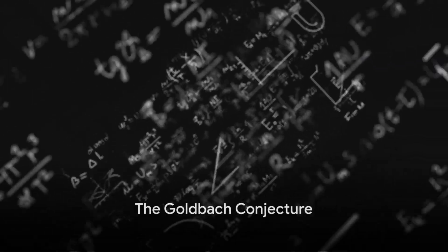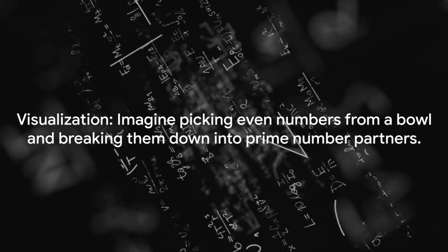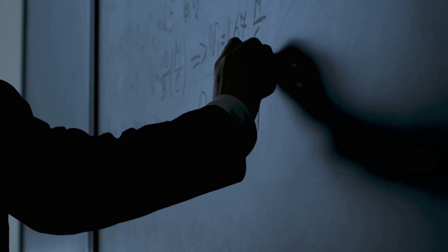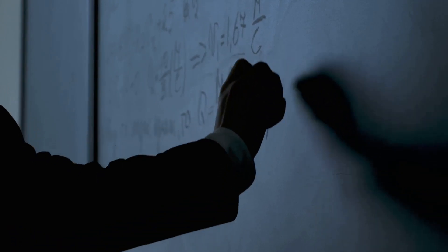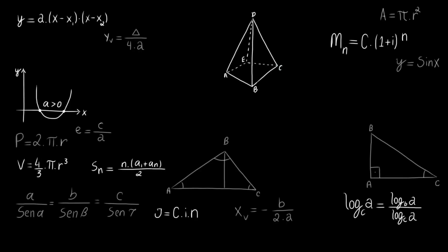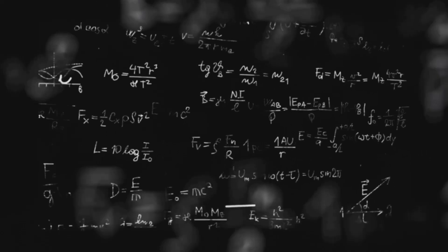So what exactly is this Goldbach Conjecture? Imagine it like this. You're at a party, and there's a bowl full of even numbers. You're asked to pick any even number from the bowl except two, because two is the only even number that's not a fan of mingling. Now your task is to break down the number you've picked into two prime number partners.